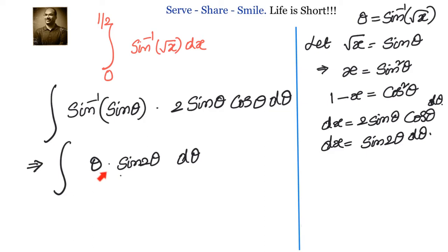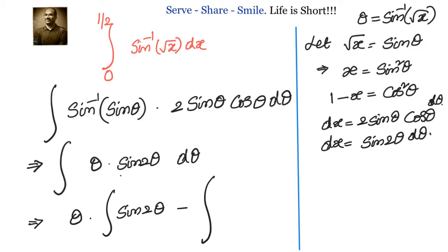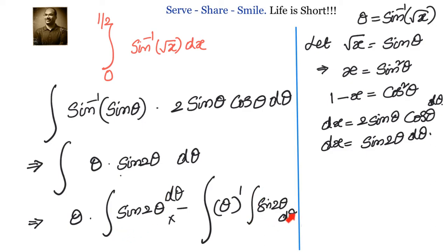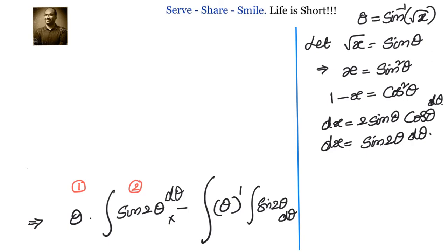The integration by parts formula is: first function × integral of second function, minus the integral of (derivative of the first function × integral of the second function). So with θ as first and sin2θ as second, we apply this formula.